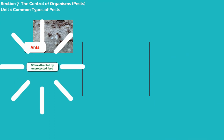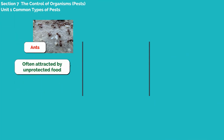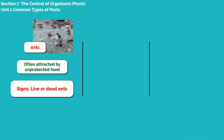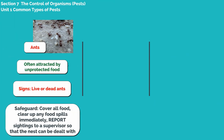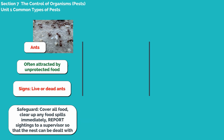Ants are often attracted by unprotected food. Signs of them are live or dead ants. In order to safeguard, cover all food, clear up any food spills immediately, and report sightings to a supervisor so that the nest can be dealt with.